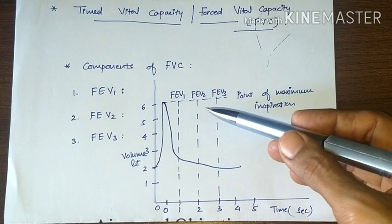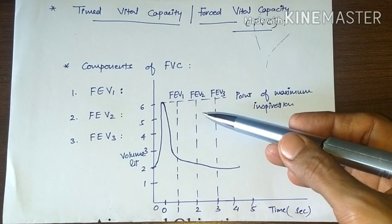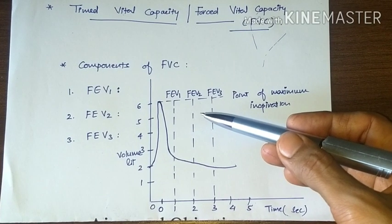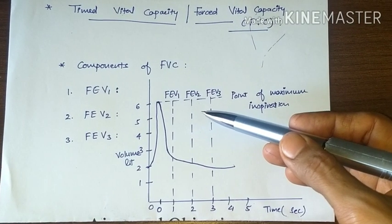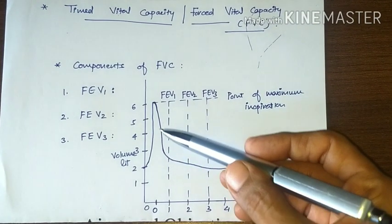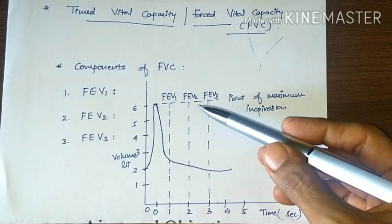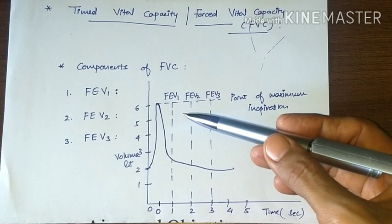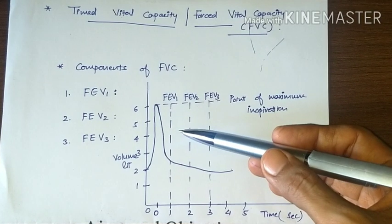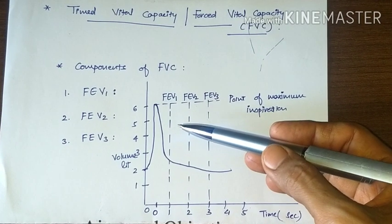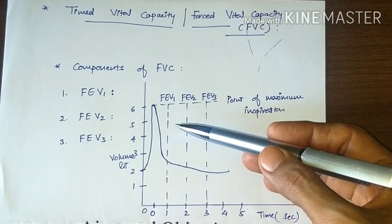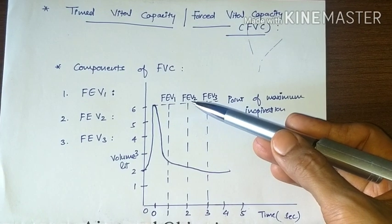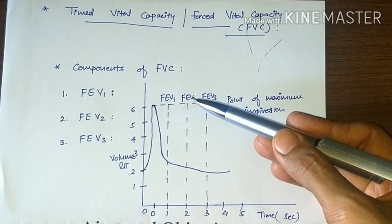Next is FEV2, that is forced expiratory volume in 2 seconds. It is the volume of air that is expired in the first 2 seconds, that is from the start to the second second. Now FEV2 is about 90% of FVC. If our FVC is 4800 ml, then FEV2 is 90% of 4800 ml.